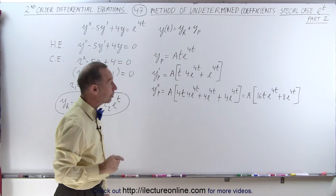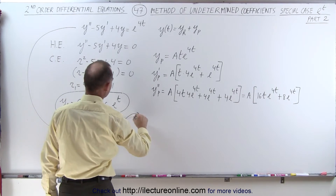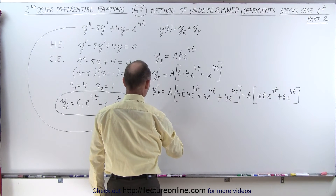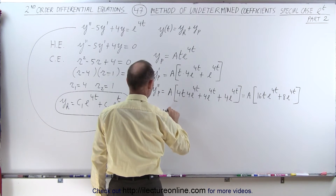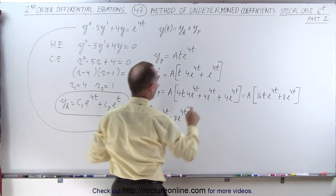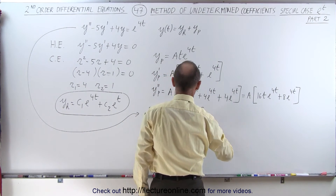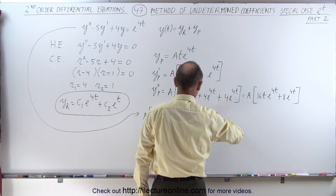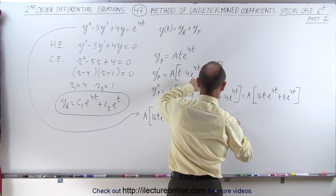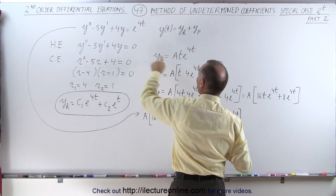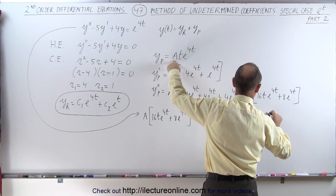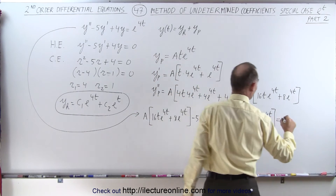Now we're ready to find the undetermined coefficient. We plug into the original differential equation: y''_p is A times (16t·e^(4t) + 8e^(4t)), minus 5 times y'_p which is A times (4t·e^(4t) + e^(4t)), plus 4 times y_p which is A times t·e^(4t), and we set that equal to the right-hand side which is e^(4t).